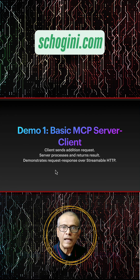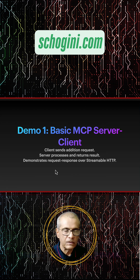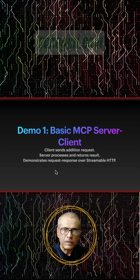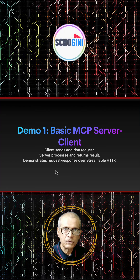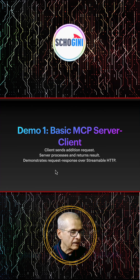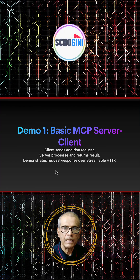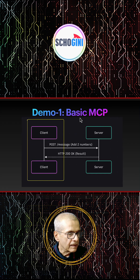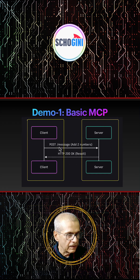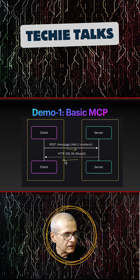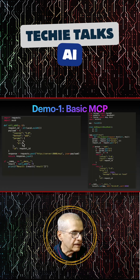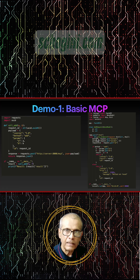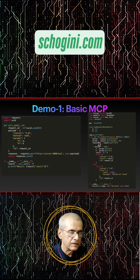Basic MCP server: the client sends an addition request to the MCP server, server processes and returns the result. Simple HTTP communication can also fall into this category, demonstrating request-response over streamable HTTP. Here we have the client and the server — client makes a request and server responds, just like normal HTTP. The full code is shown in the video itself and will be added to the description as well.